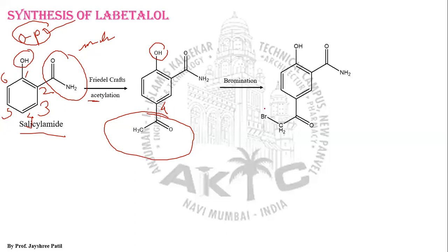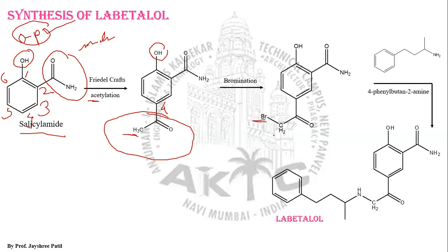This acetylated moiety then undergoes bromination, or halogenation, where one of the hydrogens is replaced by bromine, generating the halogenated moiety.